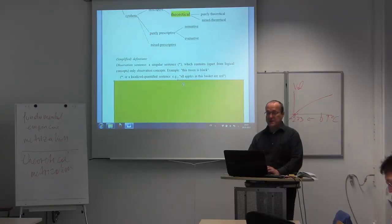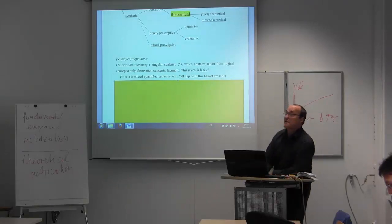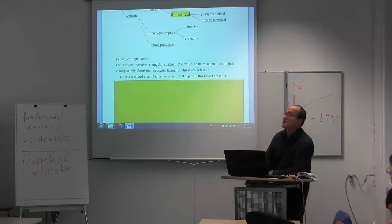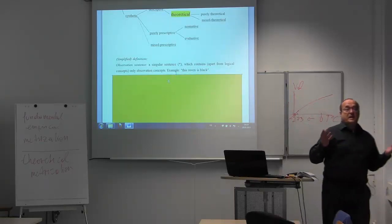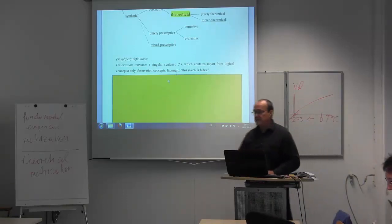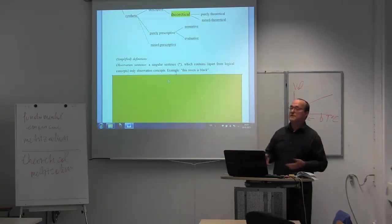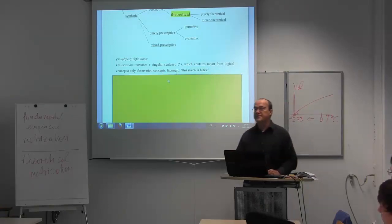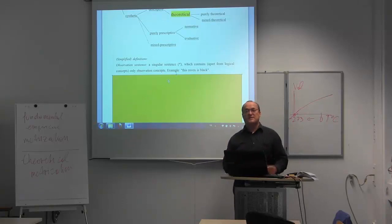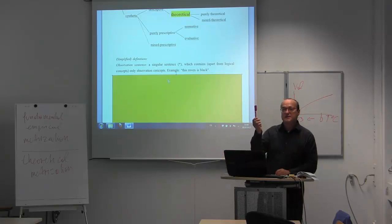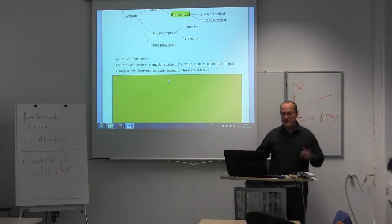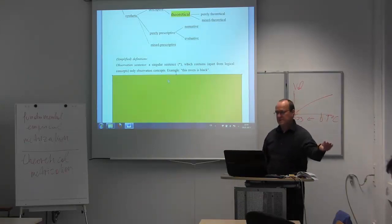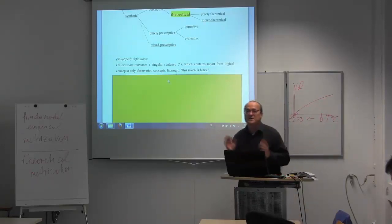How can we define an observation sentence? It is a singular sentence which contains, apart from logical concepts, only observation concepts. For instance, 'this raven is black'. The negation of an observation sentence is also an observation sentence — 'this raven is not black'. Conjunctions of observation sentences are also observation sentences — 'this raven is black and this pencil is red'. The conjunction can grow longer: 'this person is brown-eyed, and that person is brown-eyed, and that person is blue-eyed', and so on.